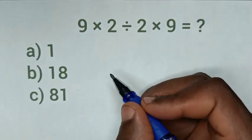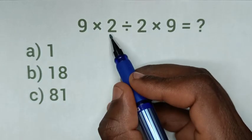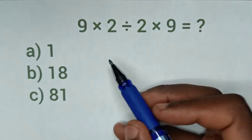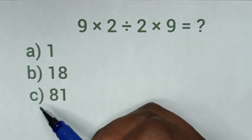Hello everyone! How to solve 9 times 2 divided by 2 times 9? By selecting answers in A, B, or C.